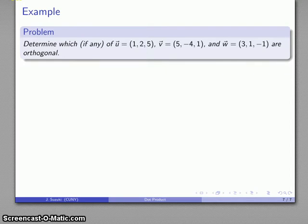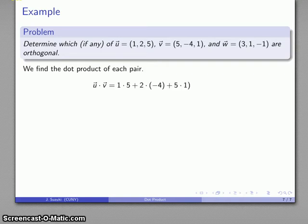So, for example, I have three vectors. Vector U (1, 2, 5), V (5, -4, 1), W (3, 1, -1). And let's see if these vectors are orthogonal. So I'll find the dot product of each pair. U dot V, I'll multiply the components and add. And that gets me negative 2. It's not 0, so these two vectors are not orthogonal. The next pair, U dot W, I'm going to multiply the components together and add. And I do get 0, which tells me that U and W are orthogonal.